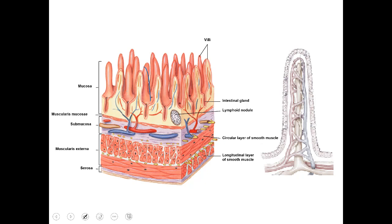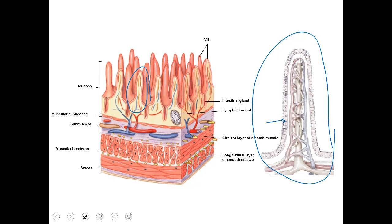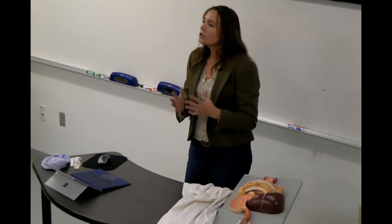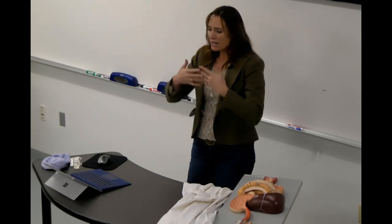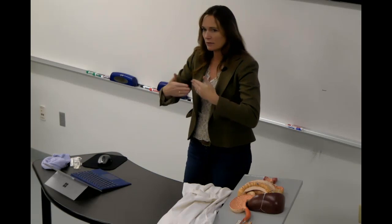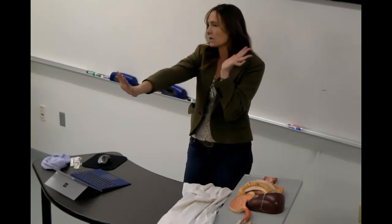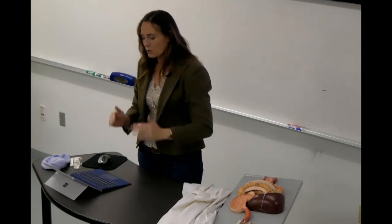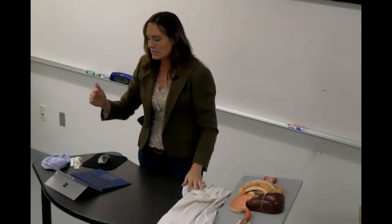Looking at a single villus, around the edges are simple columnar epithelial cells. That type of epithelial tissue allows for one cell layer thick between where the food is and where our blood and lacteals are — for maximal absorption. We don't want it as thin as in the lungs; we want a compromise. One cell layer thick to absorb things easily, but it's a big cell to allow for some distance and protection. That's why simple columnar epithelial cells are the hallmark throughout the entire small intestine.